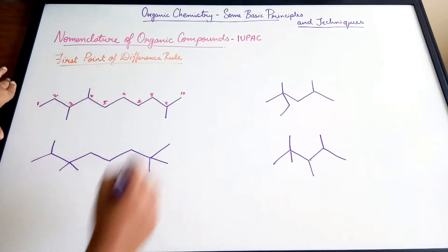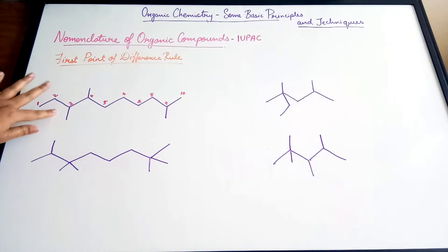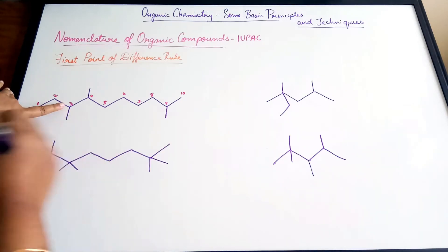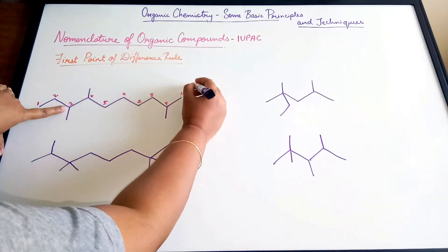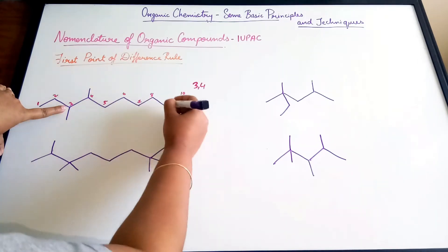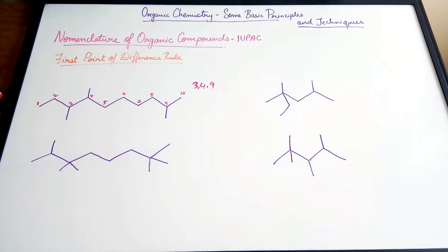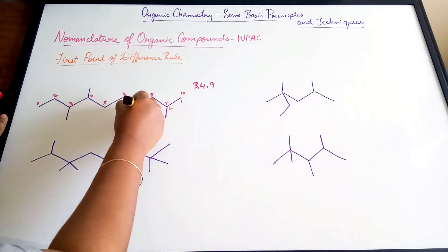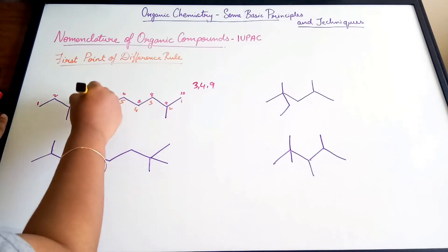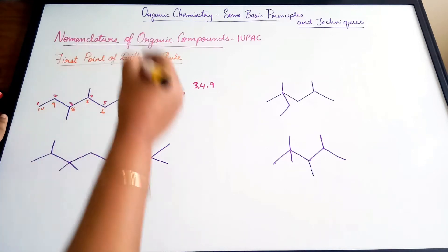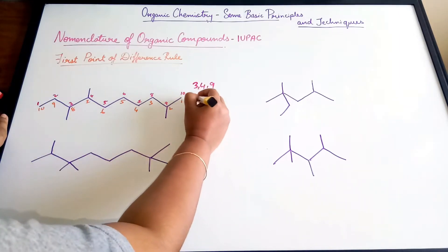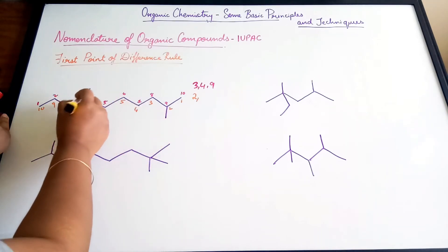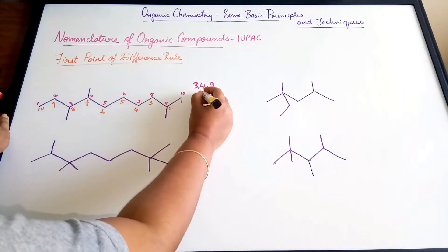Now we write down the carbon number where each substituent is present, in increasing order. Going left to right, we get substituents at positions three, four, and nine. The second way is going from right to left: one, two, three, four, five, six, seven, eight, nine, and ten.